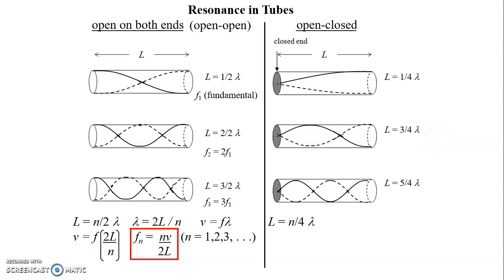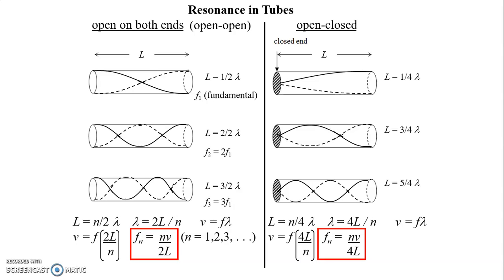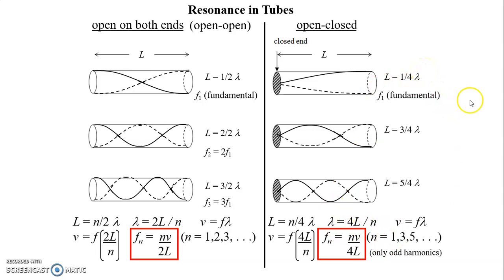So we write L equals N over 4 times lambda, or lambda equals 4L over N. Combining with V equals F times lambda, we get V equals F times 4L over N, and solving for the frequency of the nth harmonic gives FN equals NV over 4L. This is the equation for frequencies in an open-closed tube. However, N, while still an integer, is only 1, 3, 5 — only the odd harmonics are present in an open-closed tube. The fundamental is the smallest frequency, but the next harmonic is 3 times the fundamental, then 5 times. This contrasts with the open-open tube, where all harmonics are present.